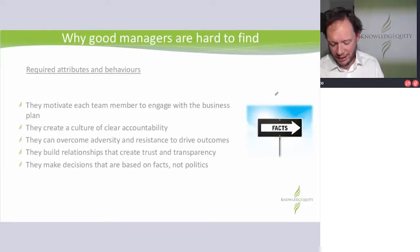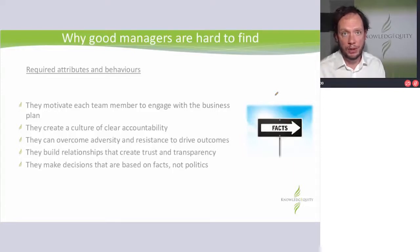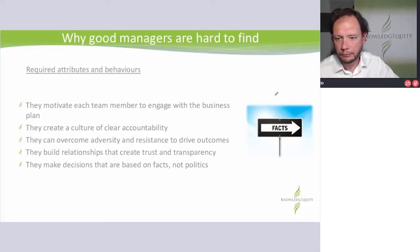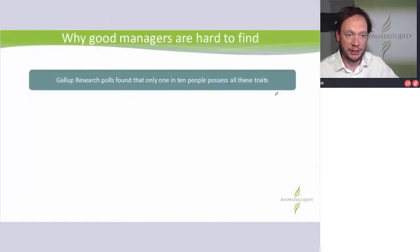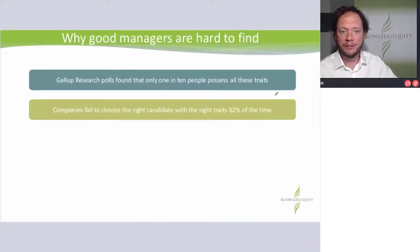I think people don't realize it until you end up in middle management. You end up sometimes having the complaint coffees, but also realizing that you need to get together with colleagues at that level in order to deliver organization-wide projects. But interestingly, Gallup research polls found that only one in ten people possess all of these traits. Ouch. Companies fail to choose the right candidate 82% of the time.